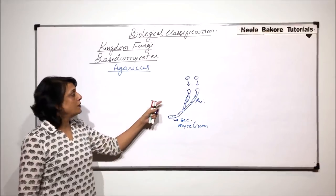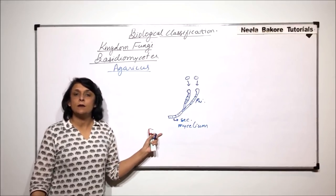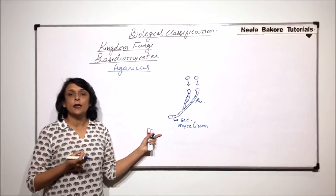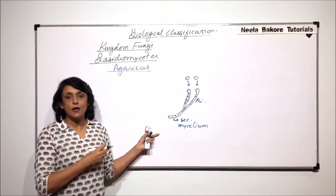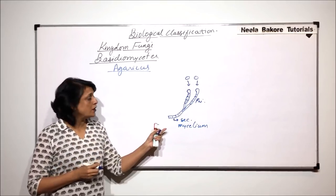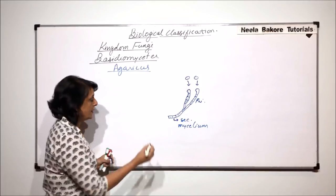Primary mycelium normally degenerates and the secondary remains. Most of the times when we find the vegetative structure, we find only the secondary mycelia.